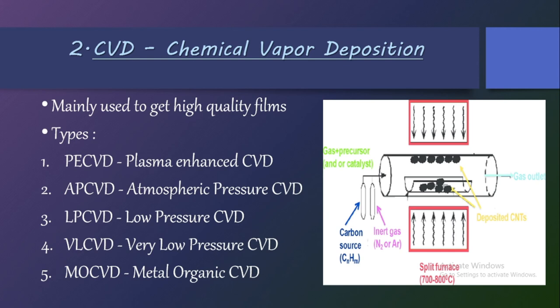In a CVD chamber, the substrate is kept inside, and carrier gases and source material are introduced. The source is evaporated and a chemical reaction takes place within the chamber. Due to differences in pressure or temperature, the film is formed on the substrate. We will study the CVD process in detail in coming classes.